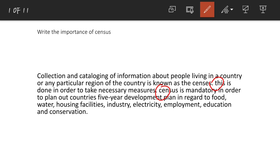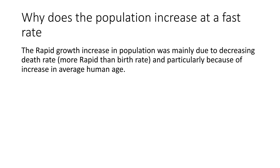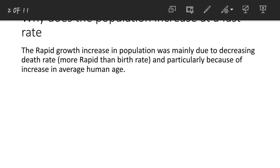The second question is: why does the population increase at a fast rate? The answer will be: the rapid increase in population was mainly due to decreasing death rate, more rapid than birth rate, and particularly because of the increase in average human age. I suggest you avoid writing the word 'rapid growth increase' — just cancel that and write 'the increase in population was mainly due to decreasing death rate.'